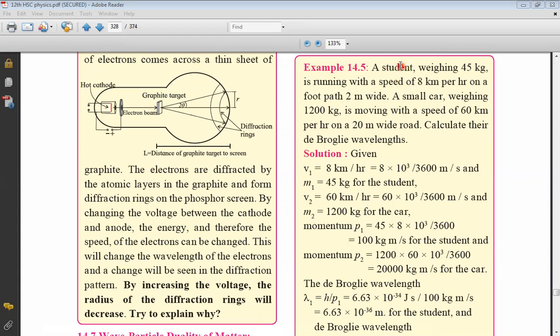Coming back to this numerical, let us look at the student first. His mass is 45 kg, so M1 is 45 kg. His velocity is 8 km per hour. I want to convert to meter per second. Kilometer to meter multiply by 1000. And hour to second, 1 hour is 60 minutes and 1 minute is 60 seconds, so 60 into 60 which is 3600 seconds.